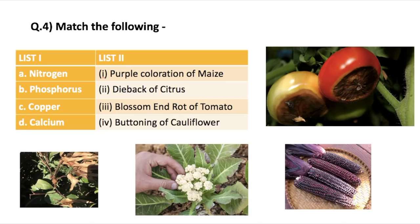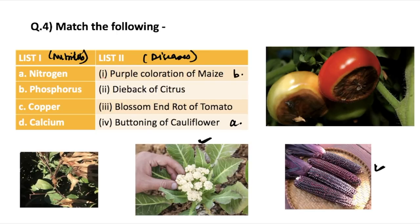Next question: match the following. List one contains important nutrients and list two contains diseases caused by their deficiency. For nitrogen, buttoning of cauliflower is caused by nitrogen deficiency. Deficiency of phosphorus causes purple coloration of maize. Deficiency of copper causes dieback of citrus — this was also asked in a previous examination. For calcium, blossom end rot (BER) of tomato is caused by calcium deficiency.